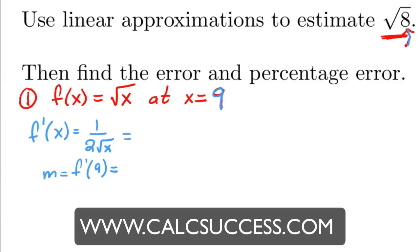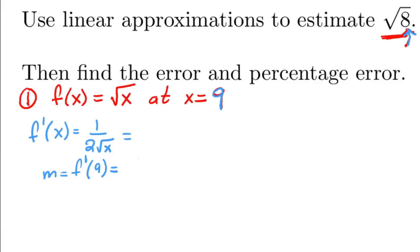And you don't plug in 8, the point that you're looking for, until the very end once you have your line. So, derivative at 9 is 1 over 2 square root of 9, which is 1 sixth.